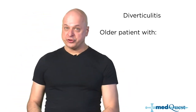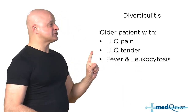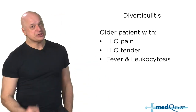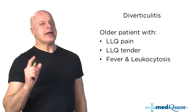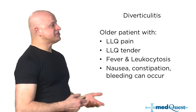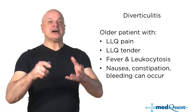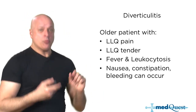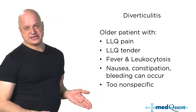Diverticulitis is an older patient with diverticulosis — the same left lower quadrant pain, but with more tenderness and more fever. You can use colonoscopy to diagnose diverticulosis, but colonoscopy and barium enema carry a higher risk of perforation in diverticulitis because diverticulitis causes weakening of the bowel wall.